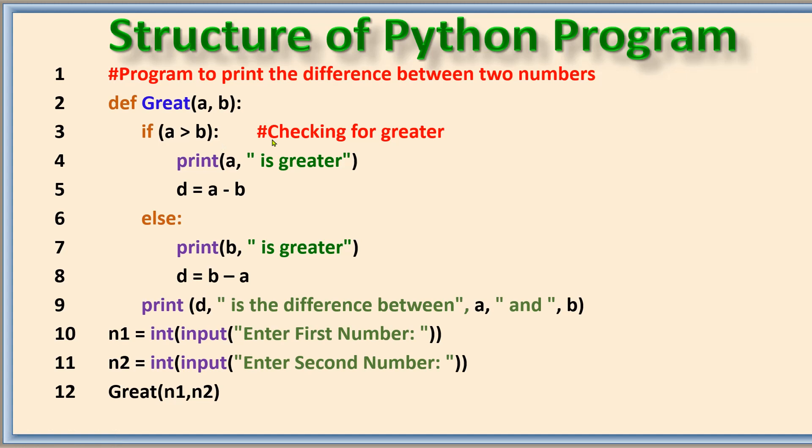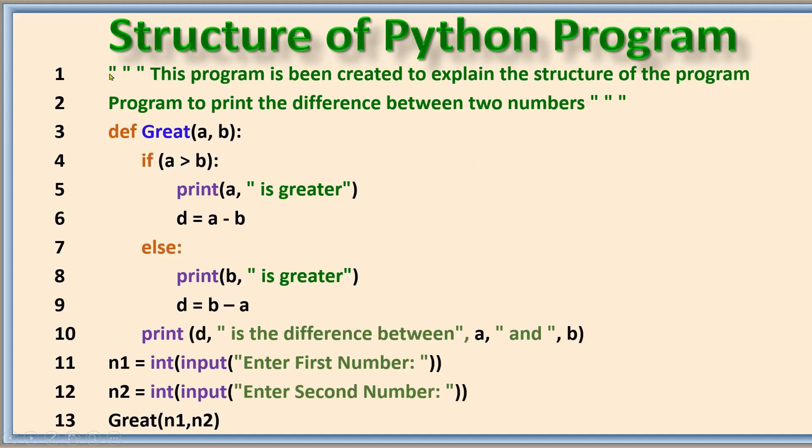These are not executable as a programming code, so these both are comments. In case a programmer needs to give reference using many lines, he or she can use hashtag for every line in the beginning. Otherwise another option is there: a triple quote can be given in the beginning, and then where it ends, again it ends with triple quote. This also can be single quotes; here it is double quote given. It also can be a single quote but three times repeatedly given. This is also called doc strings.